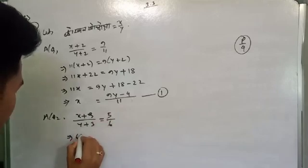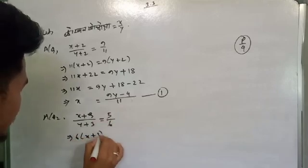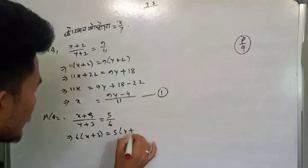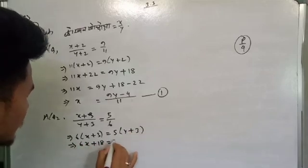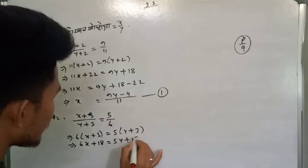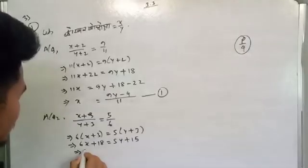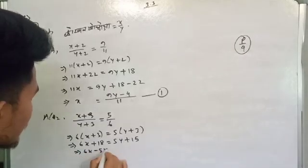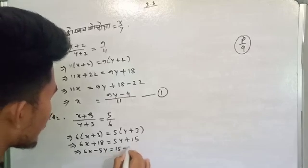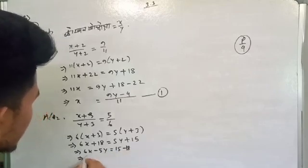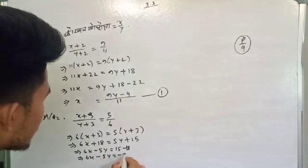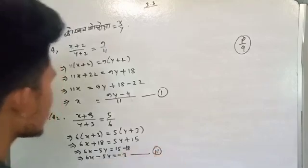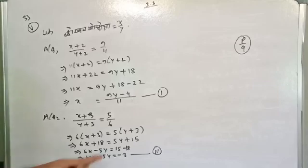6X plus 3 is equal to 5Y plus 3. So that implies 6X plus 18 is equal to 5Y plus 15. So implies that 6X minus 5Y is equal to 15 minus 18, which gives 6X minus 5Y is equal to minus 3. That is equation number two.